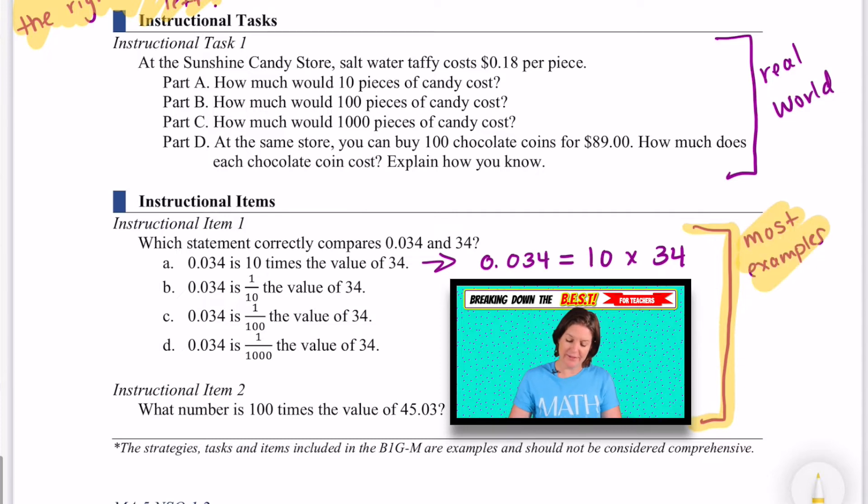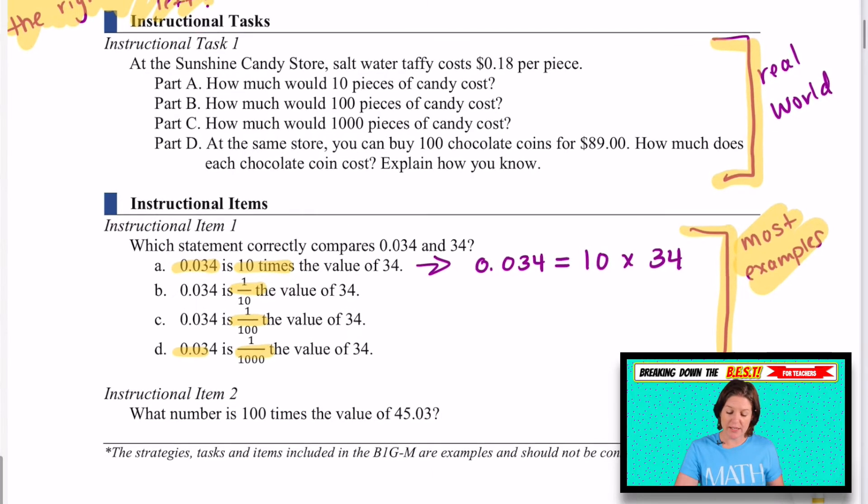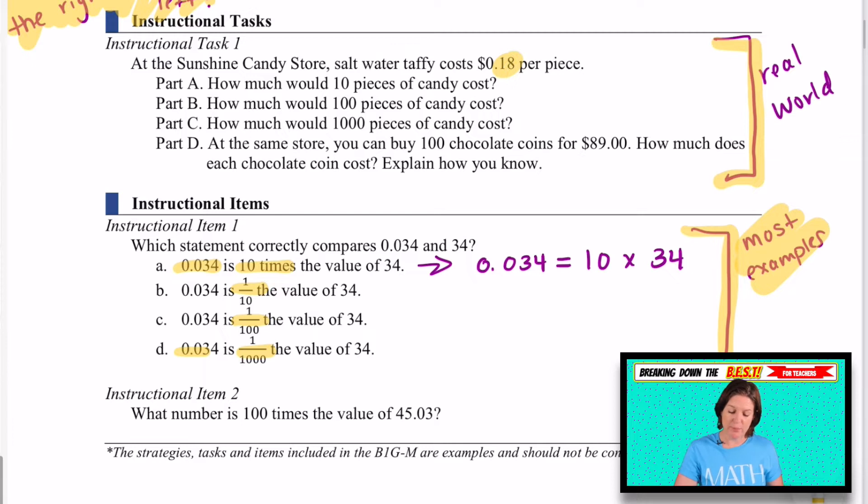Then here with the instructional tasks and items, I wrote down here that most of your examples will probably look something like this, where we're seeing explicitly here's a decimal number, 10 times, seeing these vocabulary words, one thousandth of, stuff like that. But here is more of a real world example where we have candy and if this candy costs 18 cents, how much would 10 pieces cost? How much would 100 pieces cost? How about a thousand? And I love that they're incorporating how you can see that in the real world there too.